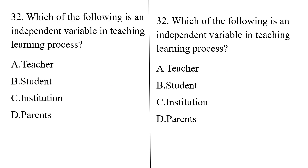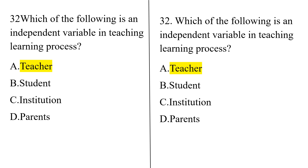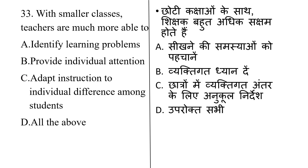Which is the independent variable in the teaching-learning process? Options are: teacher, student, institution, and parents. The correct answer is Option A: the teacher is an independent variable in the teaching-learning process.